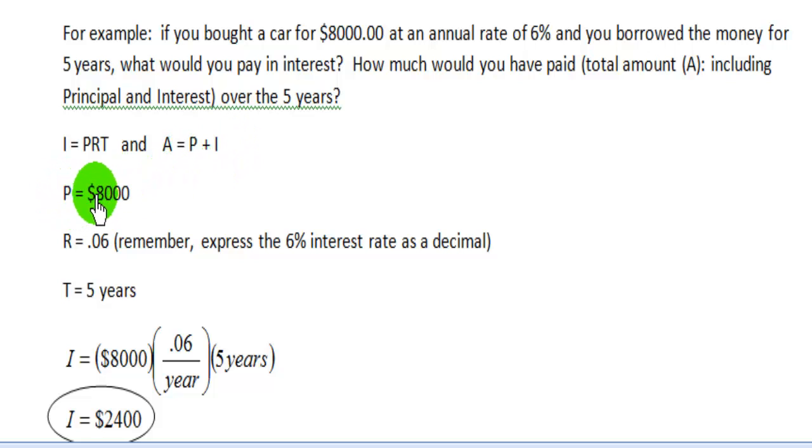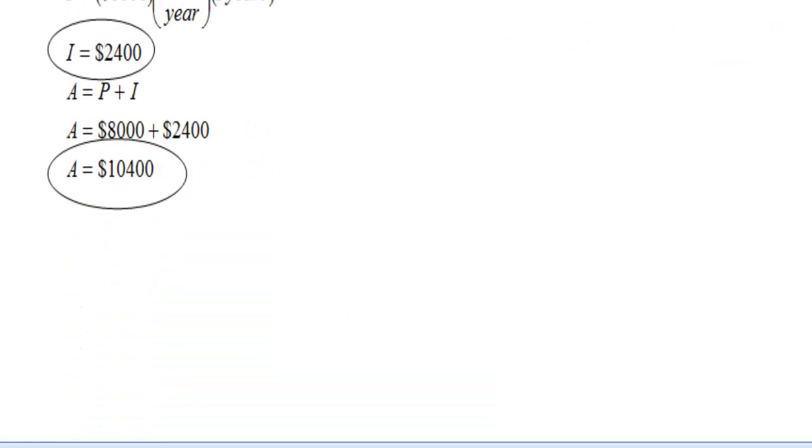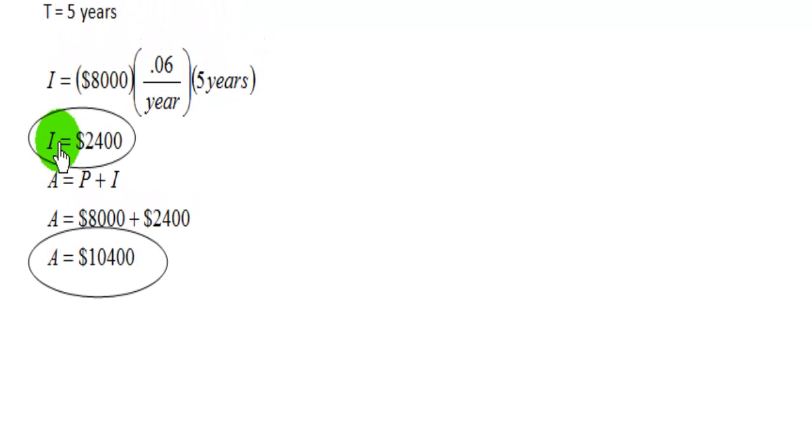The principal amount that you borrowed is $8,000. The interest rate is 6%, converted to a decimal is .06. The time is five years. The interest would be calculated by saying I equals $8,000 times .06 per year times five years. And you get that I, or the interest that you will have paid over those five years totals $2,400.